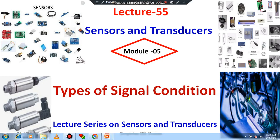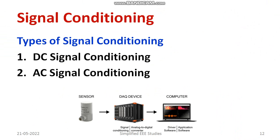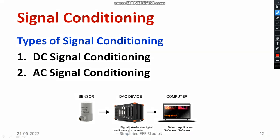Hello all, I would like to welcome you to the lecture series of sensors and transducers. In this video, we are going to discuss what are the types of signal conditioning devices, or what are the different types of signal conditioning units. In the previous session, I discussed the need for signal conditioning. Now let's have a brief discussion on two types: DC signal conditioning devices and AC signal conditioning devices.